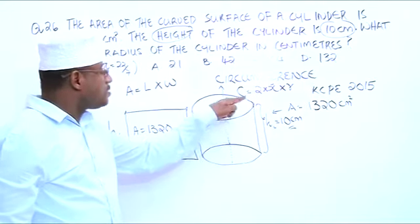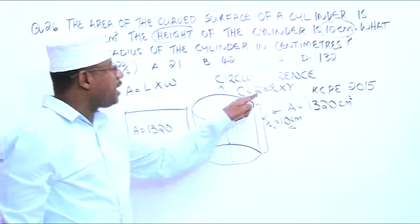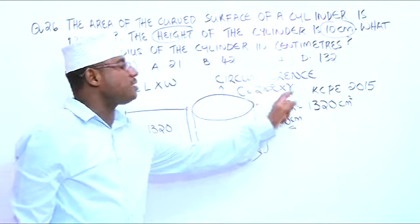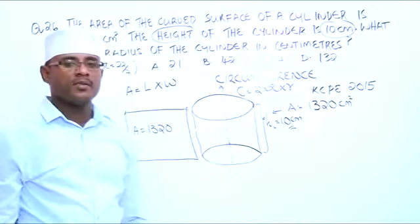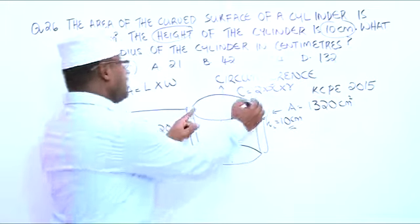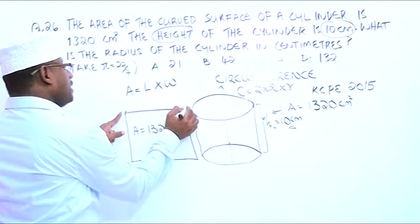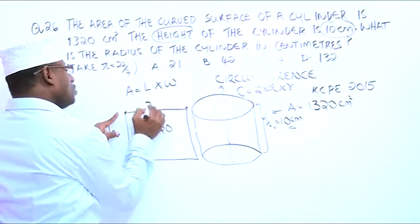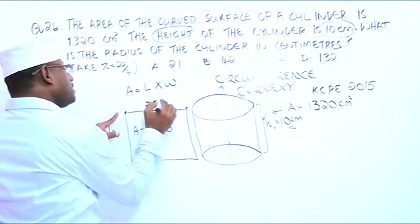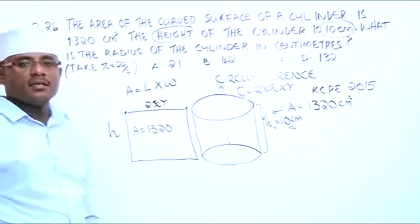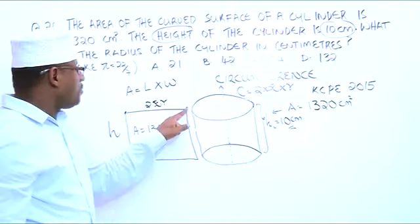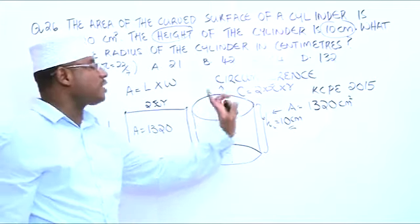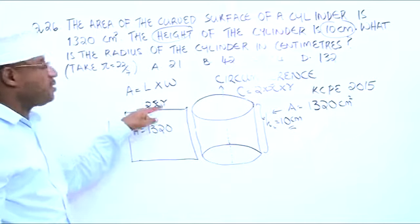The distance round a circle is known as circumference, and circumference is 2 times pi times radius. So the distance from here to here is 2πr, because that distance round the circle is the circumference, which is 2πr.